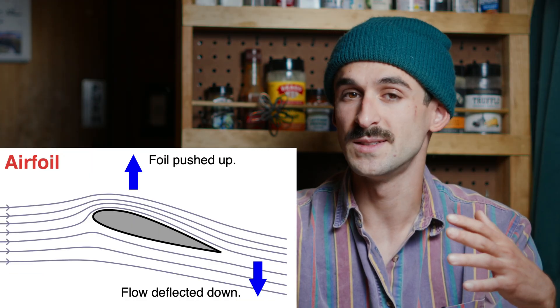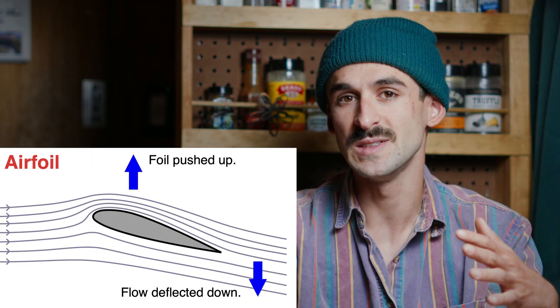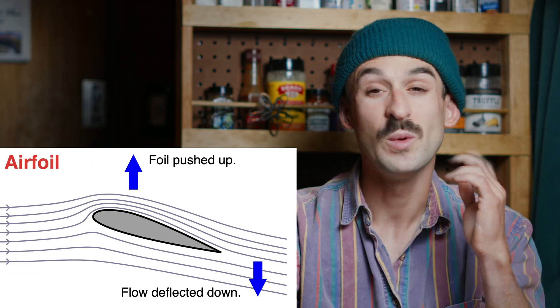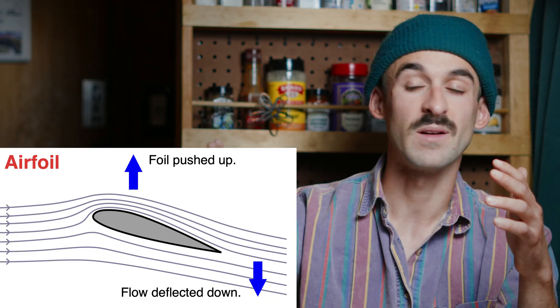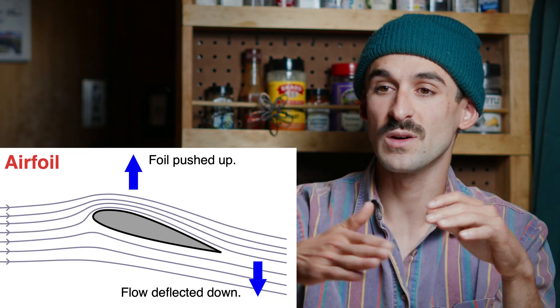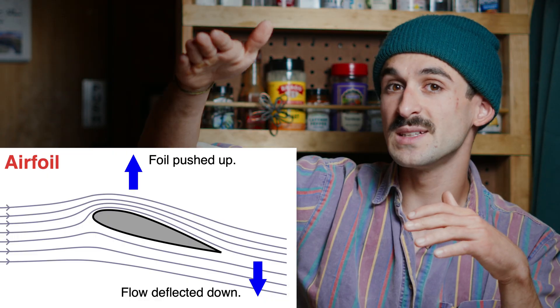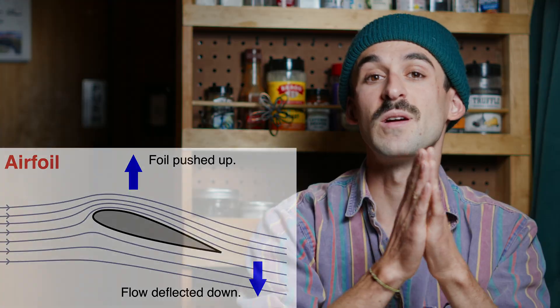The downward deflection of air is really easy to visualize. We can use the example of sticking our hand out the window of a car and pitching it up — we'd experience some lift on our hand. This is because our hand is deflecting air downwards, and there's an equal and opposite reaction to that deflected air down, pushing the wing up.